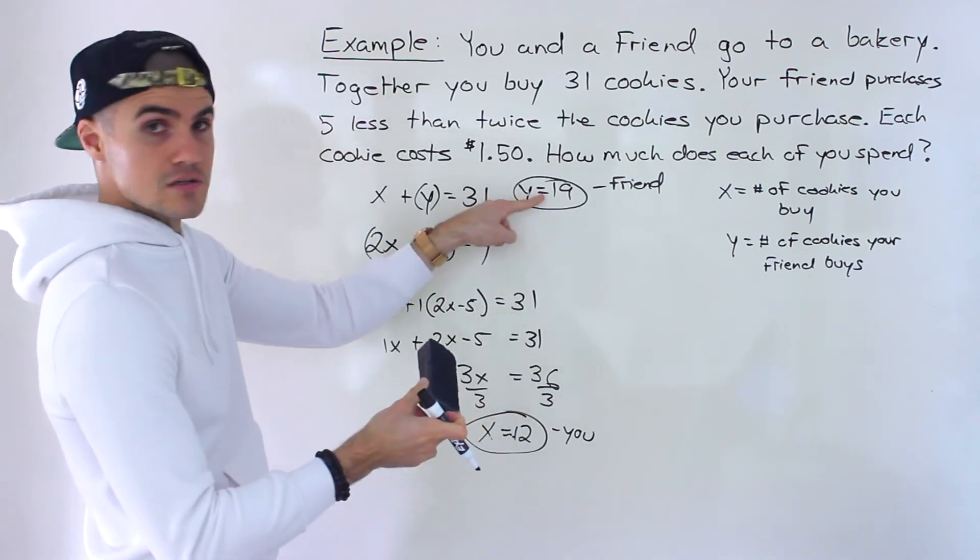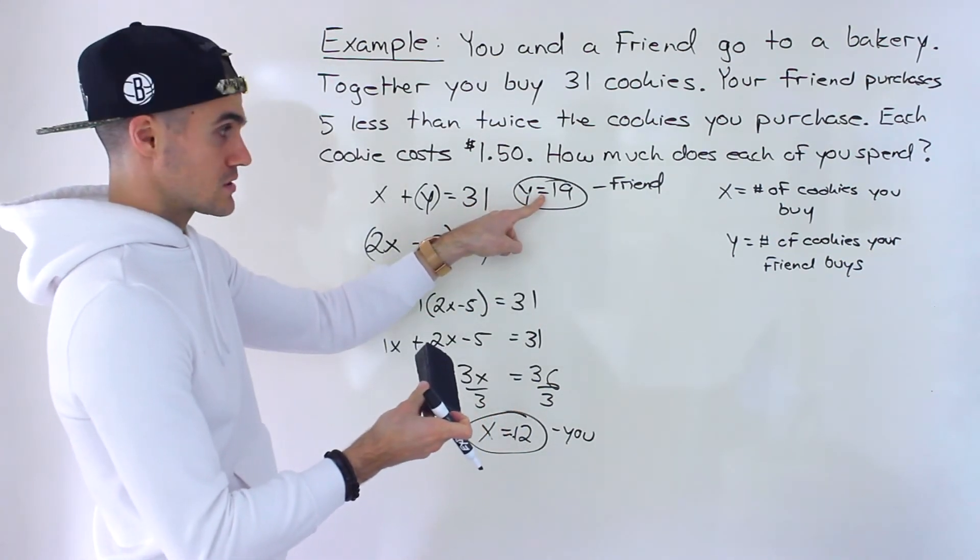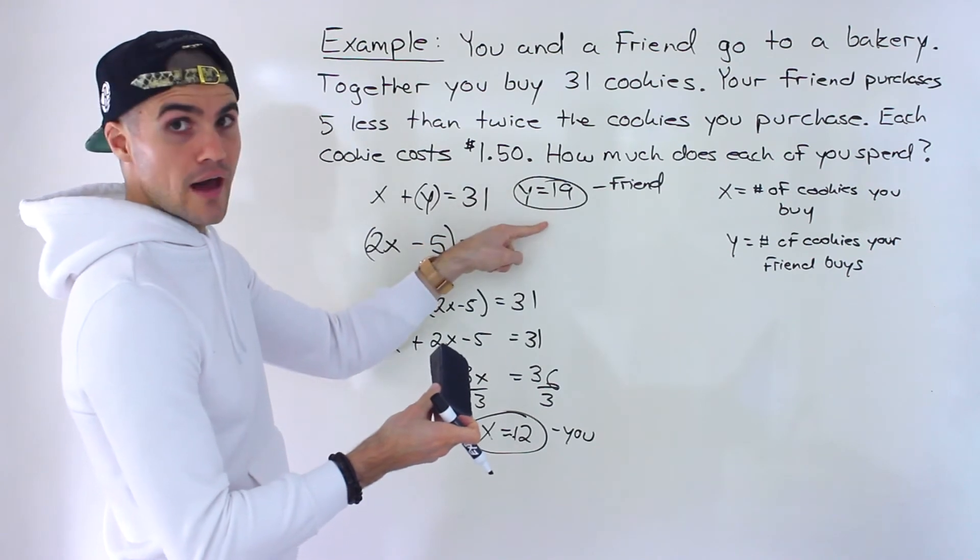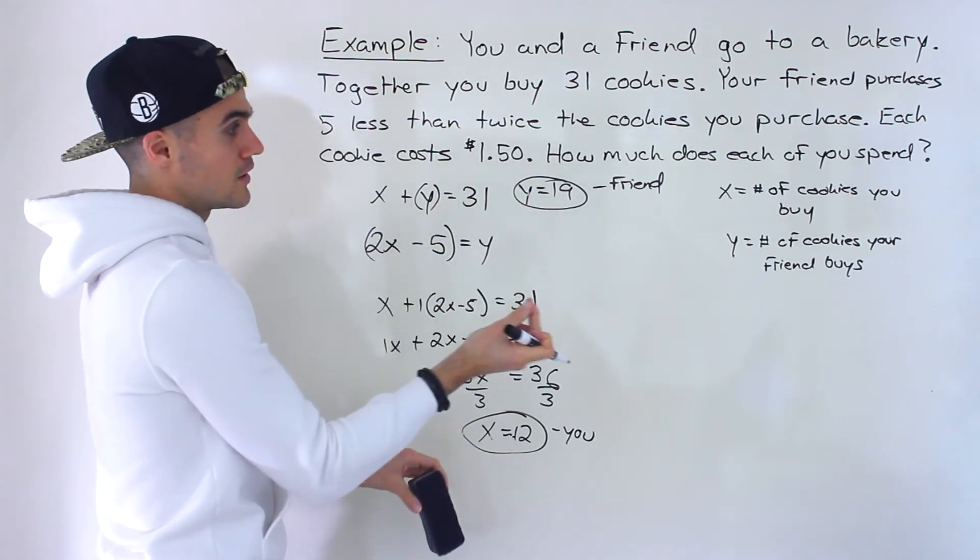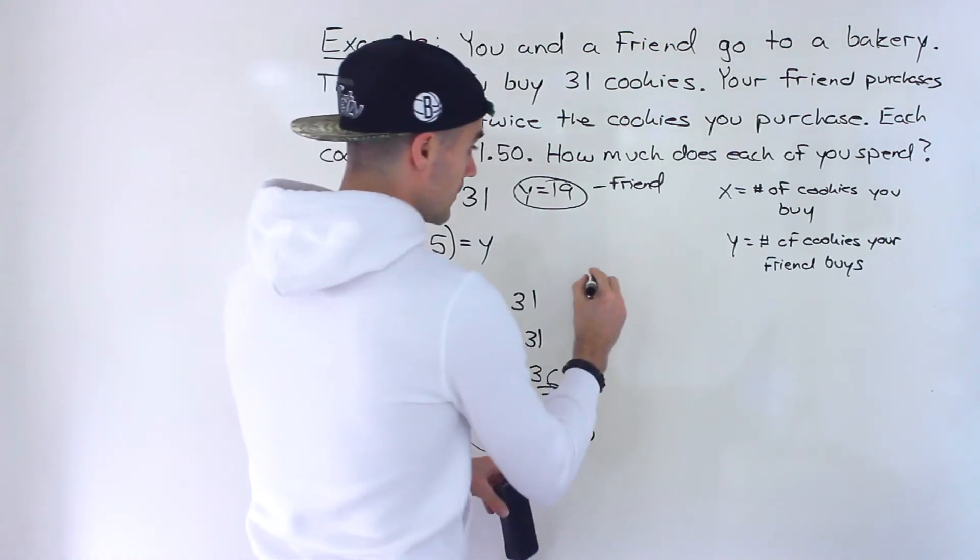They may put these solutions there, the quantity solutions. Right? And if you circle that, it wouldn't be correct, right? Because these aren't dollar amounts or the number of cookies. If you want to get the dollar amounts,